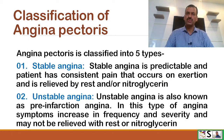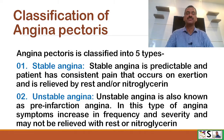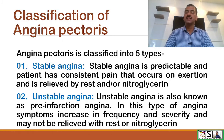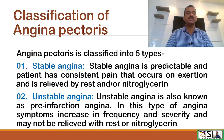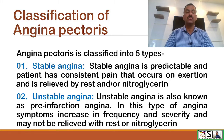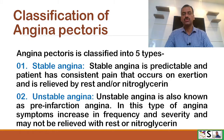Classification of angina pectoris: Angina pectoris is classified into five types. Number one: stable angina. Stable angina is predictable — we can predict when it is going to happen. The patient has consistent pain that occurs on exertion and is relieved by rest or nitroglycerin tablets.